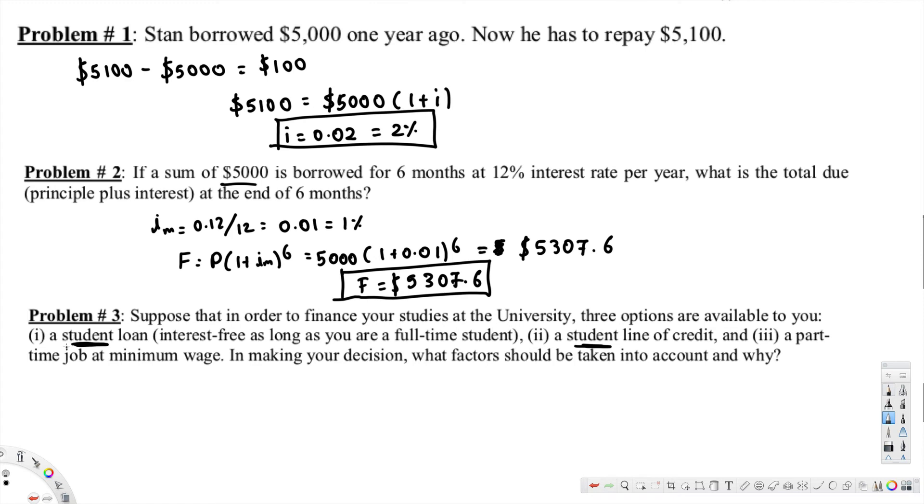And part-time job is going to be income for us, so it's better than these two - student loan and student line of credit. Having a part-time job is better.